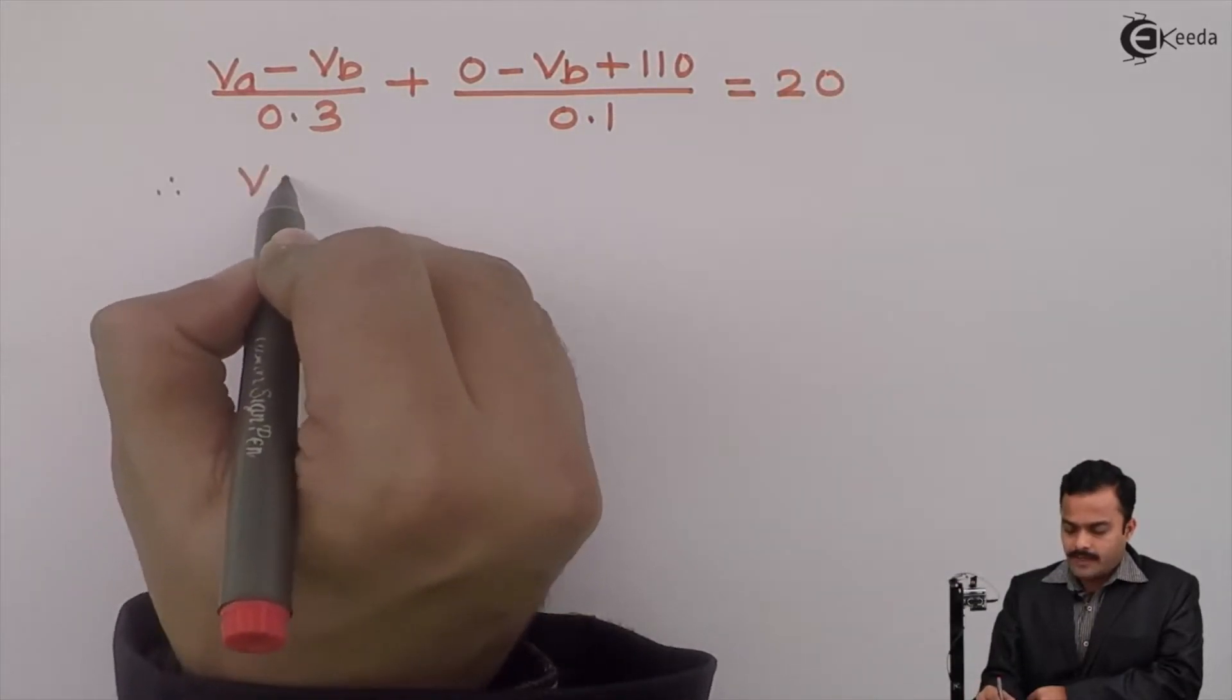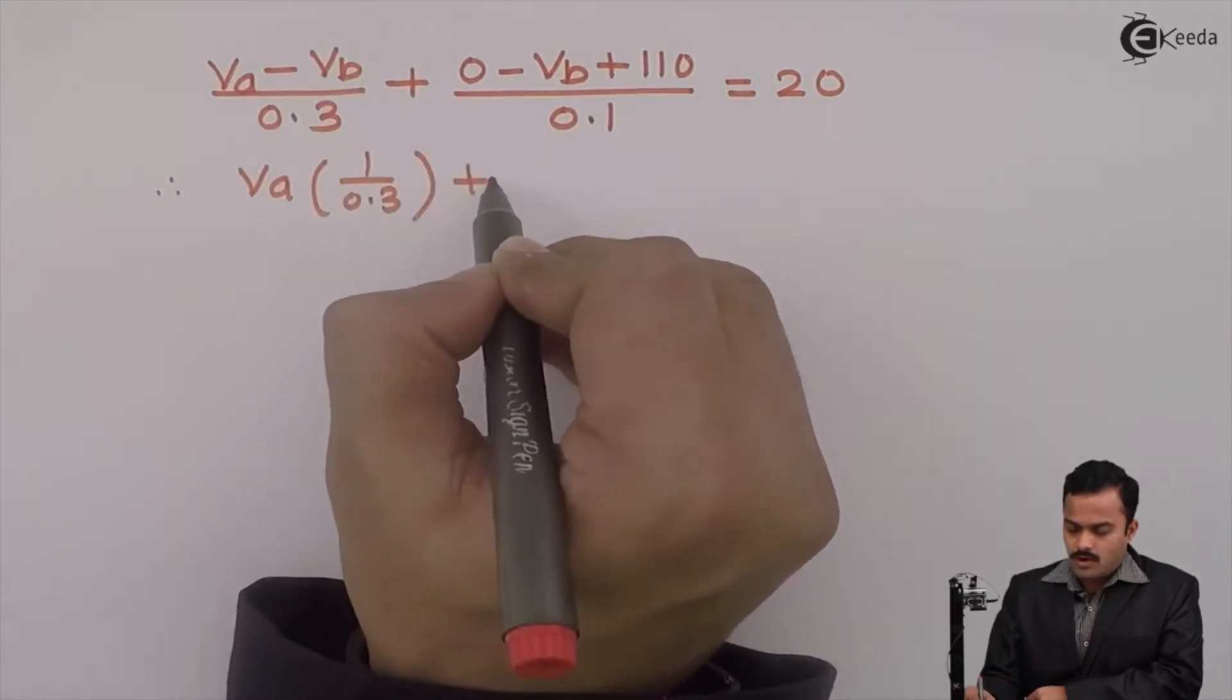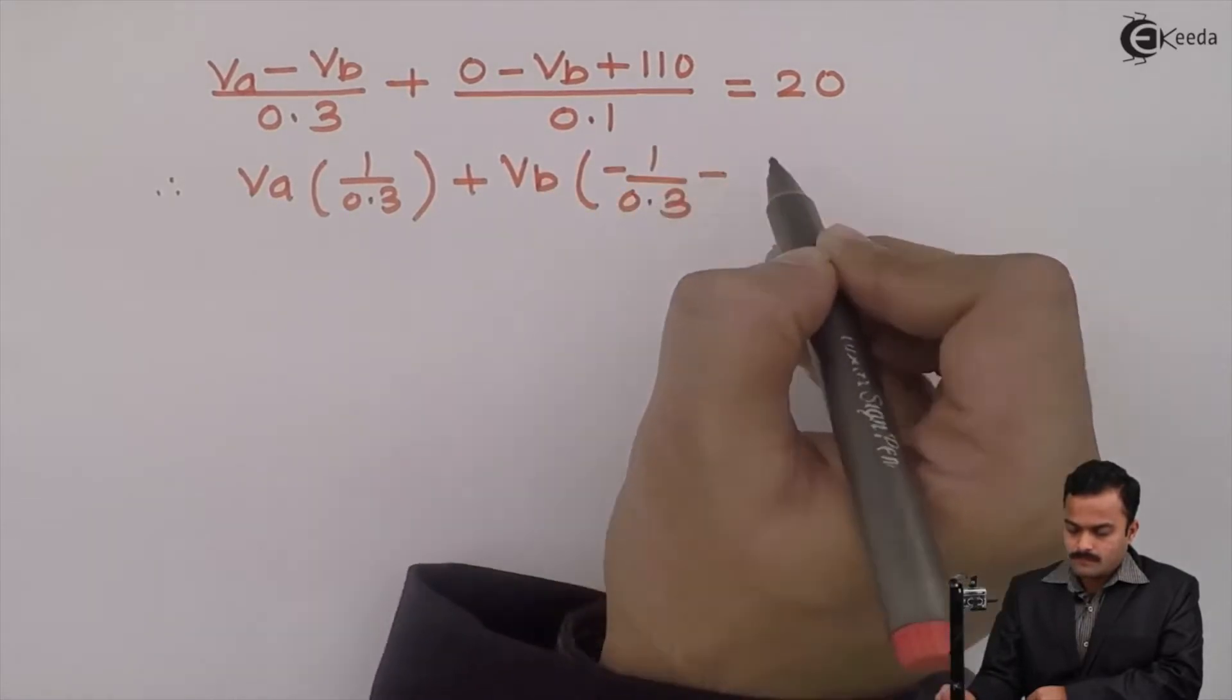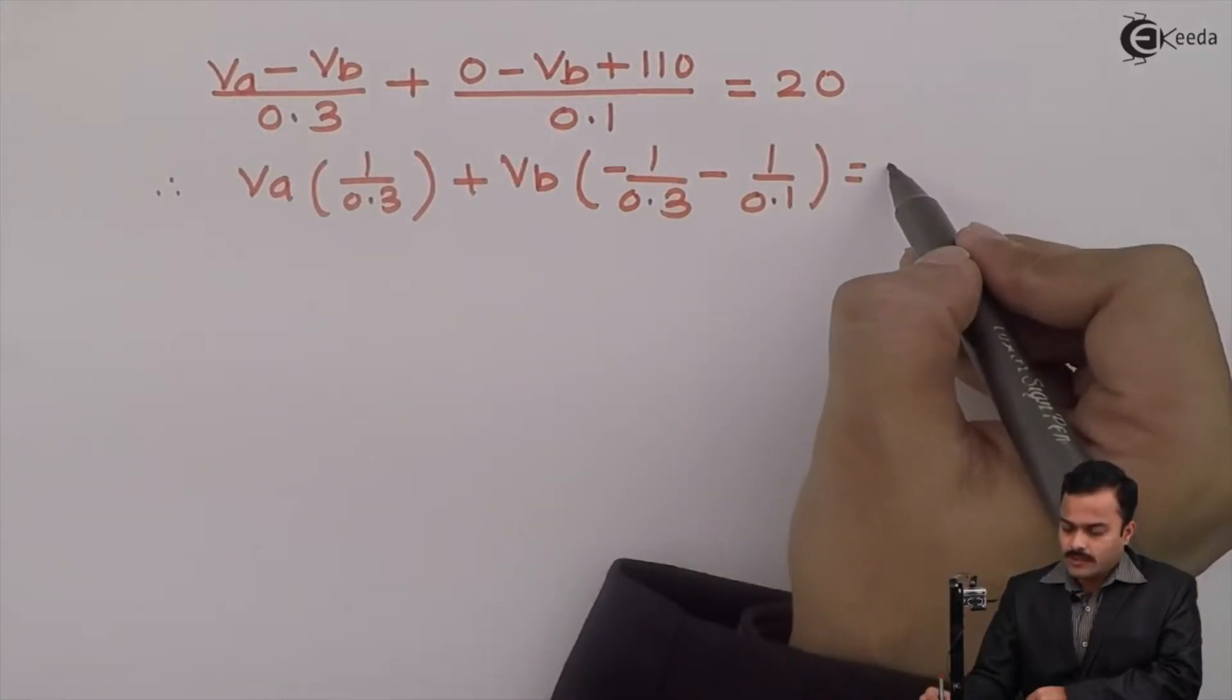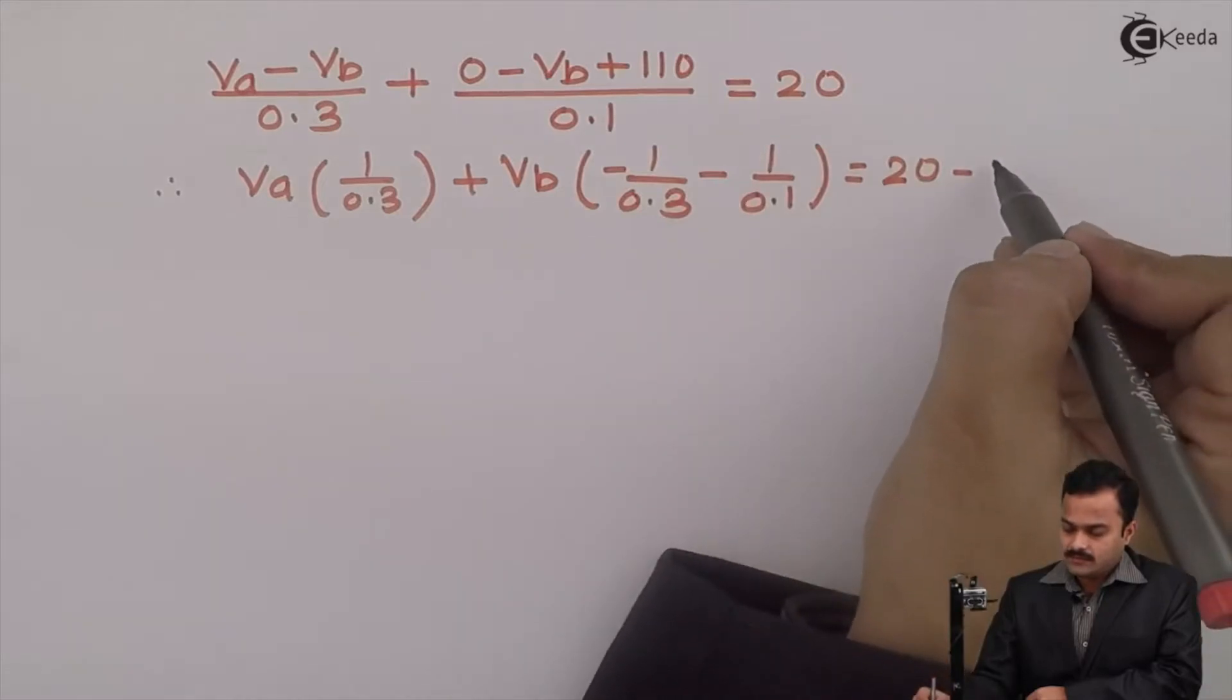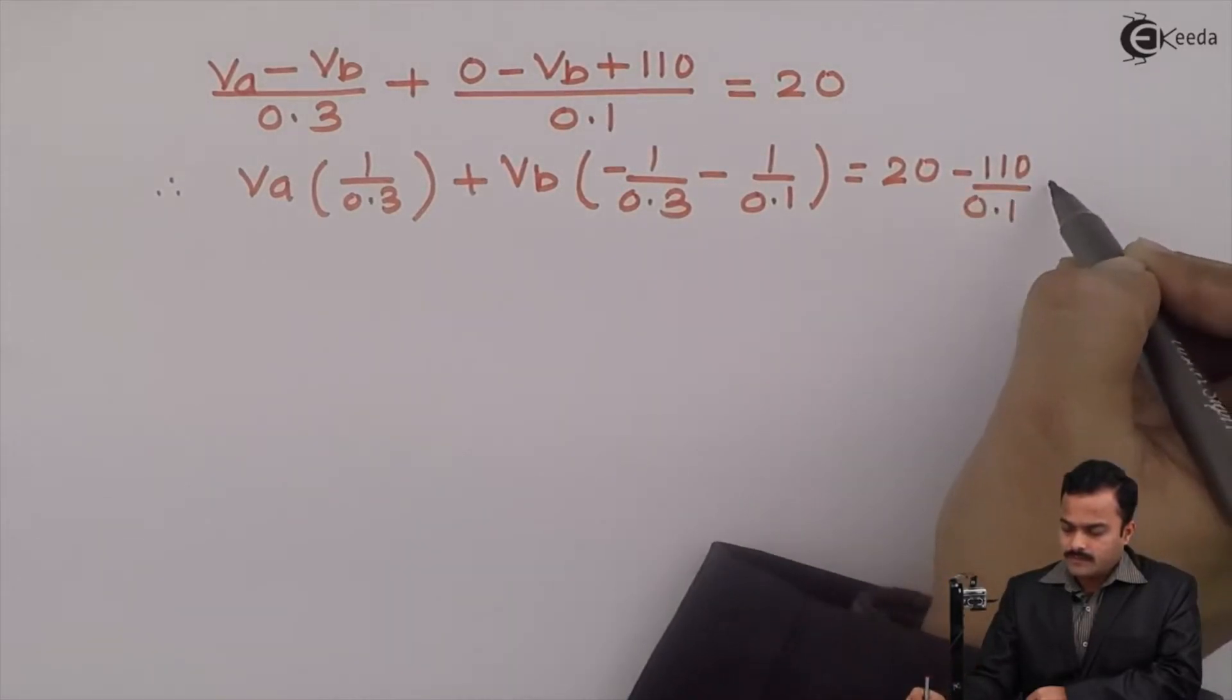I can club Va terms together, all Vb atoms together, and then constant. 20 I will keep as it is. This will go other side. So, 110 divided by 0.1. This will be equation number 2.